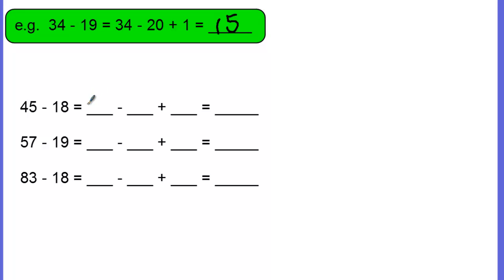So it will look like 45, round the 18 up to 20 like this. And we know that we added 2 to the 18 to make it to 20, so we put that 2 there that we added. And now we can say 45 take away 20 is 25, add 2 is 27.